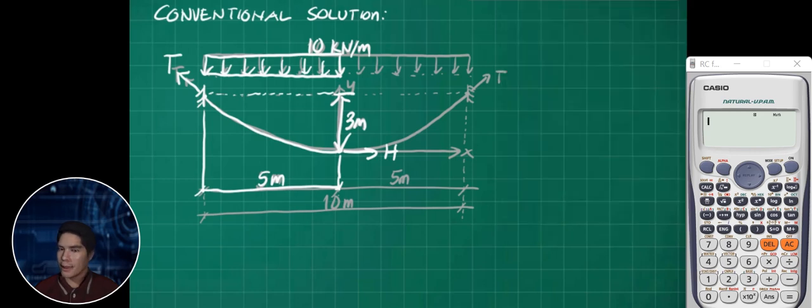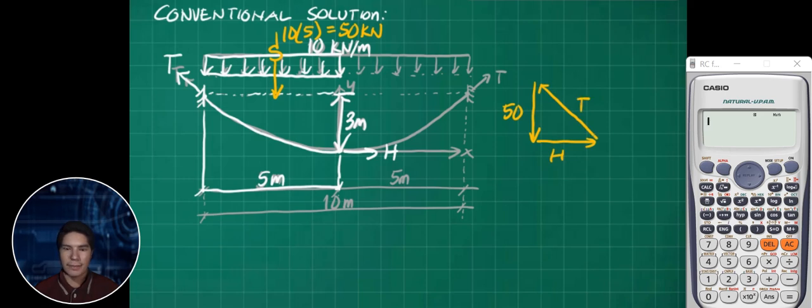We'll get the equivalent load by multiplying 10 times 5, so we get 50 kN concentrated load. We'll create a force polygon with horizontal H and 50. If I assume this is point A, considering that one, we'll sum moment at point A equal to 0.